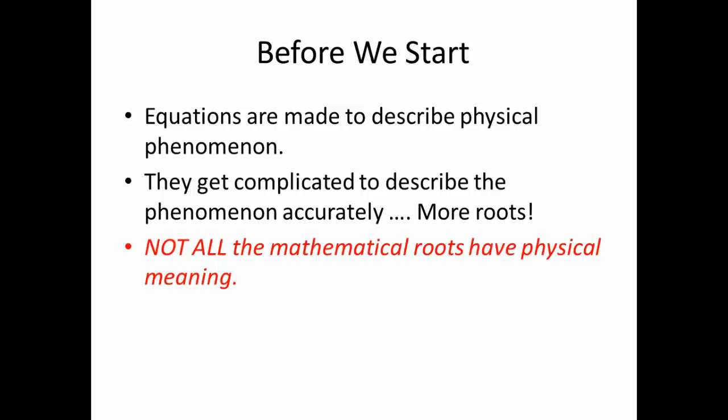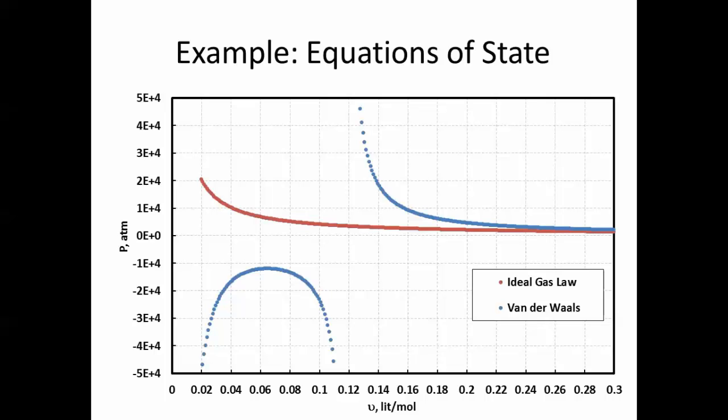One very famous case is the equations of state. It's known that the simplest case is the ideal gas, which is PV equals NRT. Or if you use V as a specific volume in liters per mole, as in this equation in this graph, then you'll have PV equals RT. So P is inversely proportional to V at constant temperature. This is the relation you would expect when you have an ideal gas—which is 1 over V, this kind of equation.